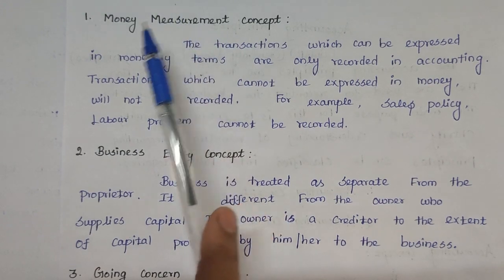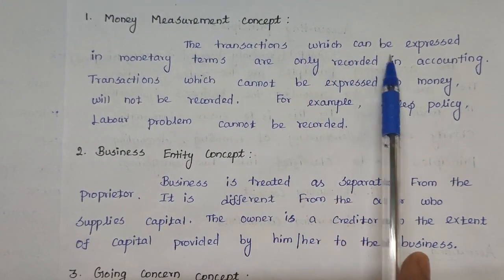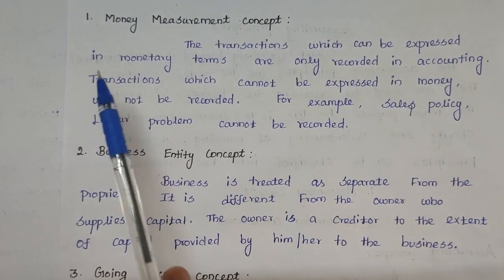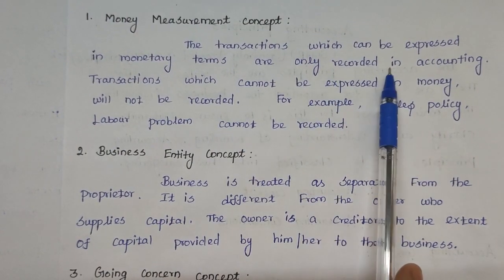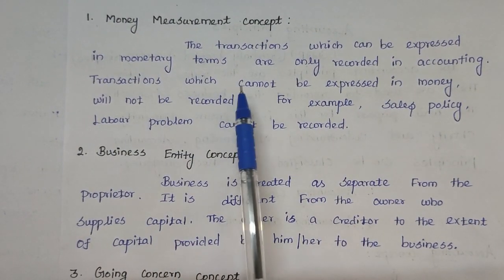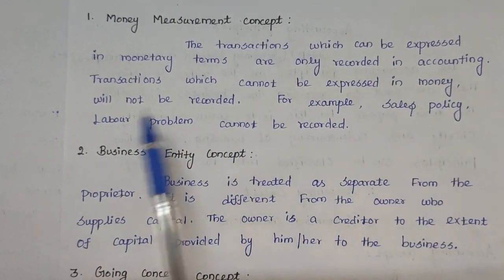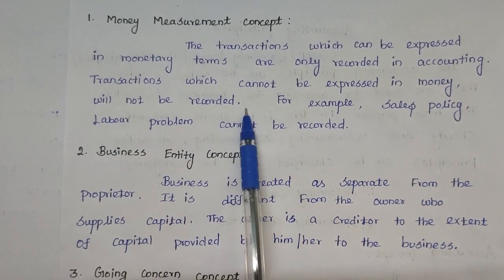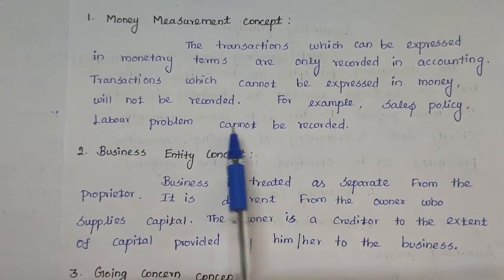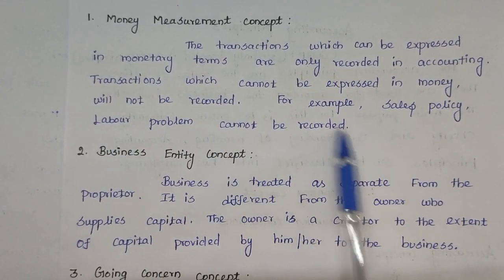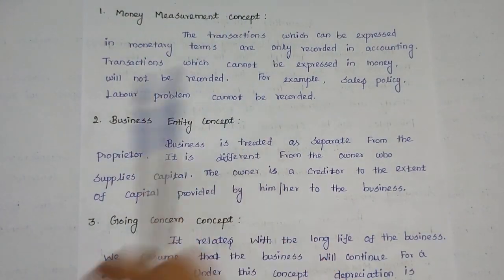The first one is the money measurement concept. The transactions which can be expressed in monetary terms are only recorded in accounting. The transactions which cannot be expressed in money will not be recorded. For example, sales policy and labor problems cannot be recorded.